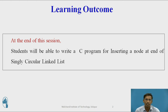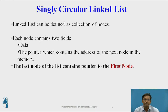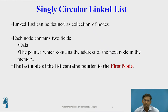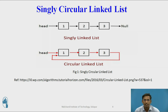We already know what a singly circular linked list is. In a linked list, it is a collection of nodes where each node contains two parts: a data part and a pointer part. In a singly circular linked list, the last node's next part holds the address of the first node — this is the key difference between a singly linked list and a singly circular linked list.